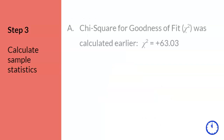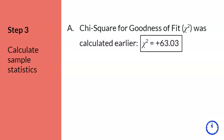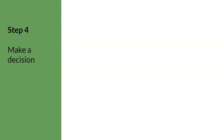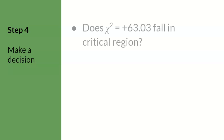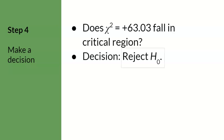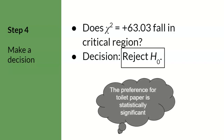Step 3. The chi-square for goodness of fit for this example was already calculated in an earlier video, which resulted in a chi-square of plus 63.03. Step 4. Now we need to compare the sample chi-square calculated in step 3 to the critical region determined in step 2. Does our chi-square fall in the critical region? The answer is yes. The decision is to reject the null hypothesis. More specifically, the preference for one or more brands of toilet paper is statistically significant.